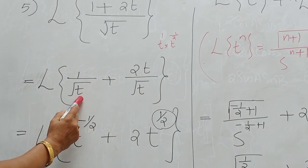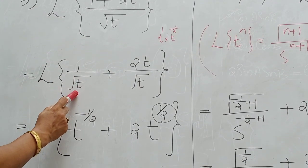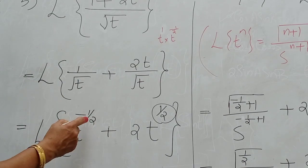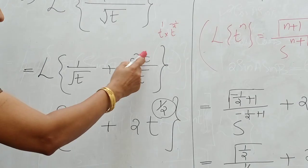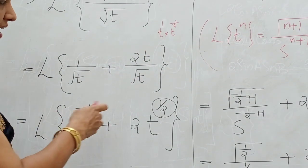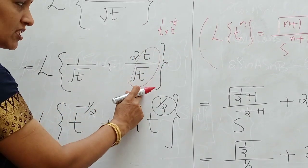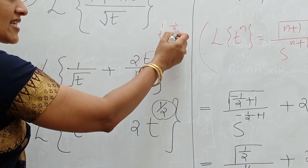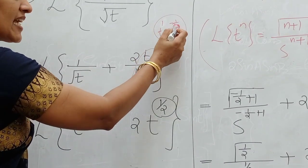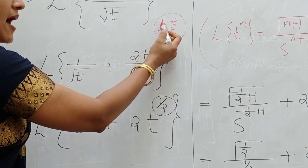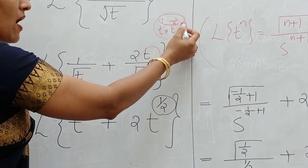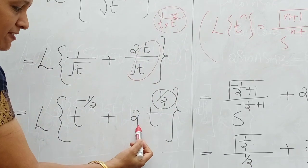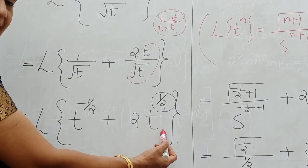Look at the first term: 1 by root T. Root T is T raised to half, so taking root T to the numerator, it becomes T raised to minus half. For the second term, T divided by root T: T is T raised to 1, and root T is T raised to minus half, so T raised to 1 into T raised to minus half — adding powers gives 1 minus 1 by 2 equals 1 by 2. Therefore the second term becomes 2 into T raised to half.